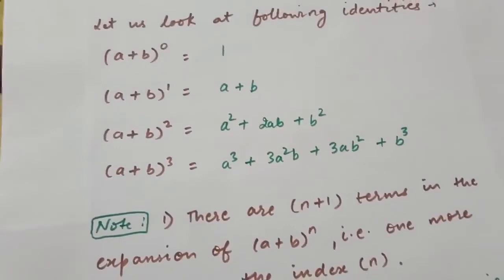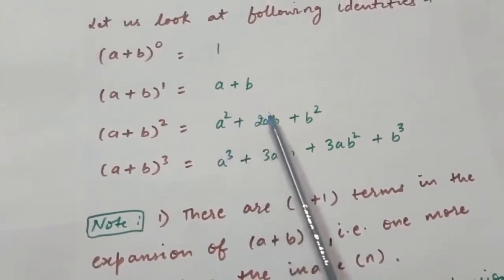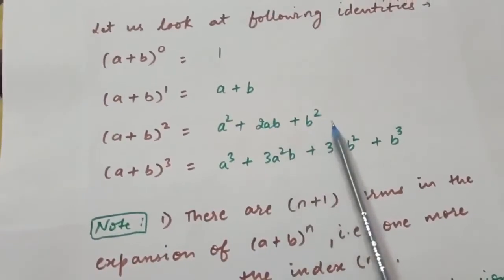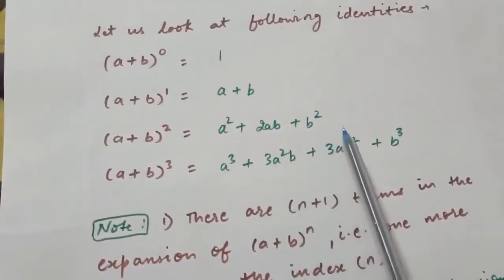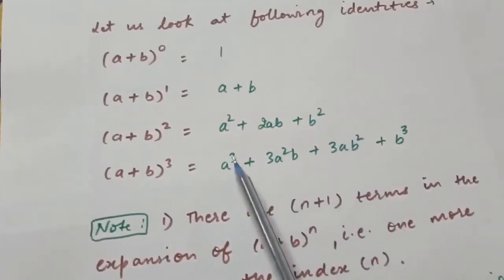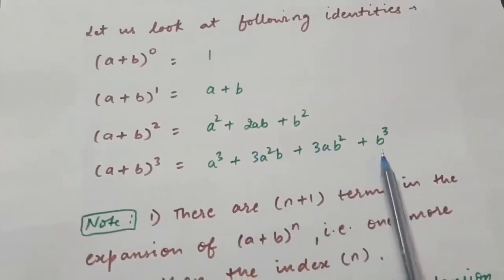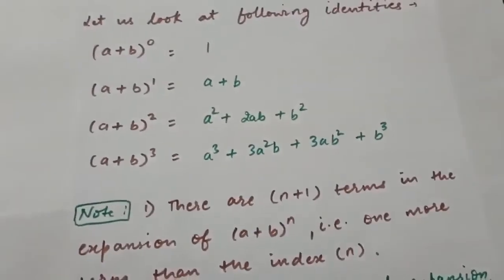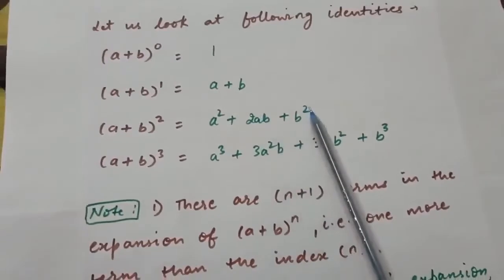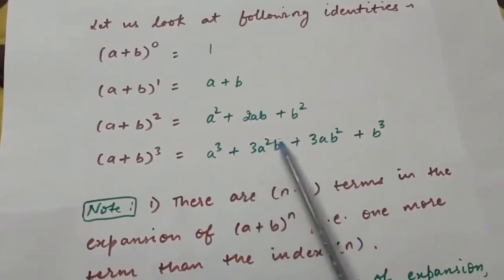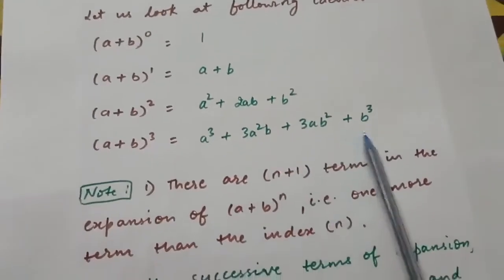You can see this pattern for (a+b)^2 also: power of a is 2, then 1, then 0 in successive terms — decreasing by 1 each time. And for (a+b)^3, power of a goes 3, 2, 1, 0. Similarly power of b increases: 0, 1, 2, 3. So power of a decreases by 1 unit and power of b increases by 1 unit in successive terms.